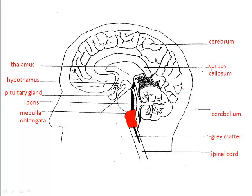All descending and ascending motor and sensory tracts between the spinal cord and the brain must pass through the medulla. These tracts cross over so that the left side of the brain receives sensory information from the right side of the body and vice versa.